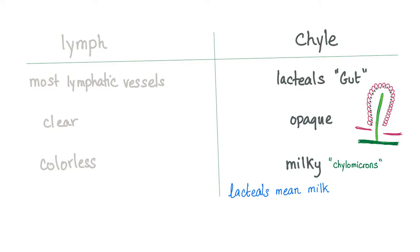Lymph and chyle are a little different. Lymph is all over the place; chyle is only in the gut. Lymph is clear; chyle is opaque. Lymph is colorless; chyle is milky — it has chylomicrons. Milky because lacteal, lactase — it means milk.